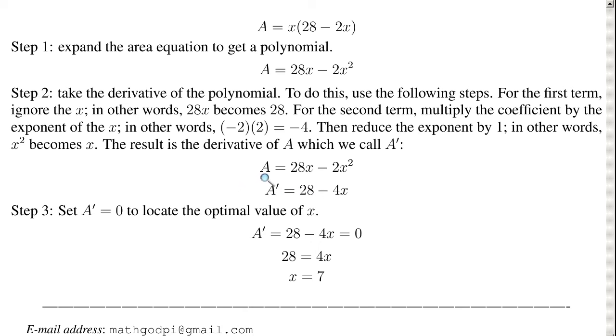So once again, the area function is 28x minus 2x squared. And to take the derivative, we use the steps that we just talked about. The 28x, you just ignore the x, that becomes 28. From the negative 2x squared, you multiply the negative 2 with the 2. 2 times negative 2 is negative 4.